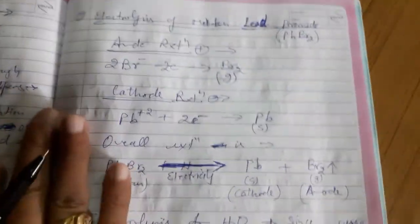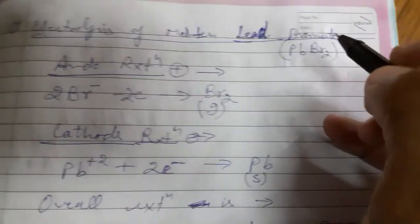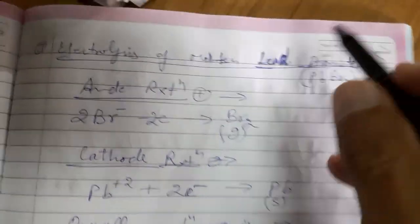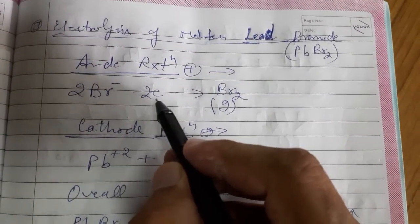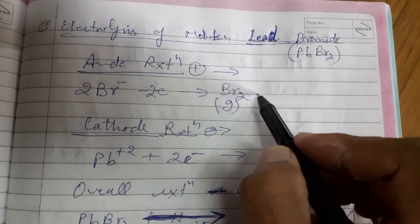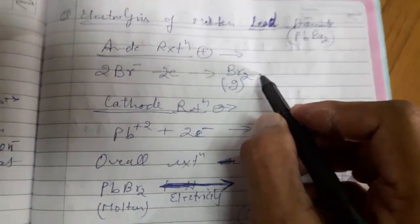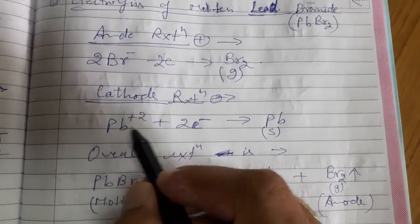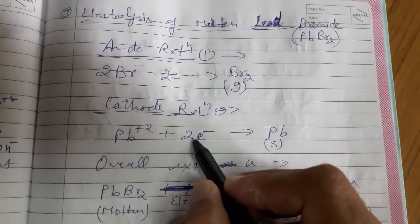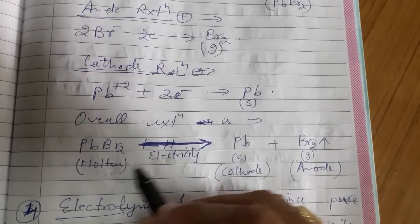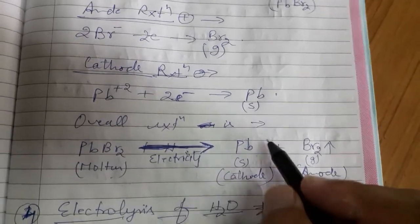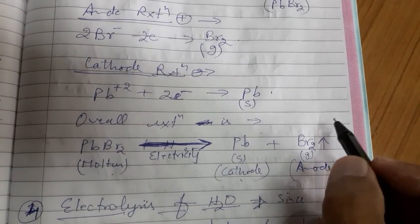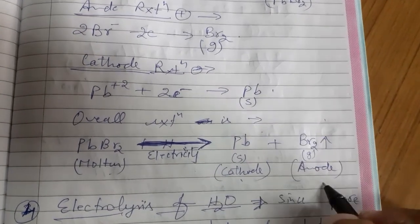Then comes electrolysis of molten lead bromide. At the anode, bromide ions lose two electrons and change into bromine gas. At the cathode, lead ions gain two electrons and change into lead metal. So the overall reaction is: molten lead bromide, on passing electricity, gives lead metal at the cathode and bromine gas at the anode.